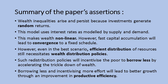A summary of this paper's assertions: the authors say that wealth inequalities arise and persist because investments generate random returns. There is an issue around inequality because of the nature of investments and interest rates modeled by supply and demand. The authors say that fast capital accumulation can occur and you can get convergence to a fixed schedule where you can eliminate that randomness and grow the economy through trickle-down economics, but in their view it's not an efficient way to do it — there is a better way that justifies wealth redistribution.